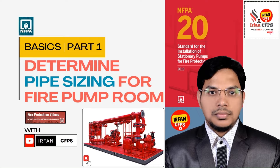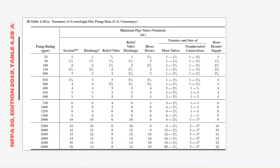In today's class we are going to determine the pipe sizing for the fire pump room. We can find Table 4.28 in NFPA 20, from which we can determine the minimum pipe sizes based on the fire pump capacity. We shall discuss this table in detail in our next slide.